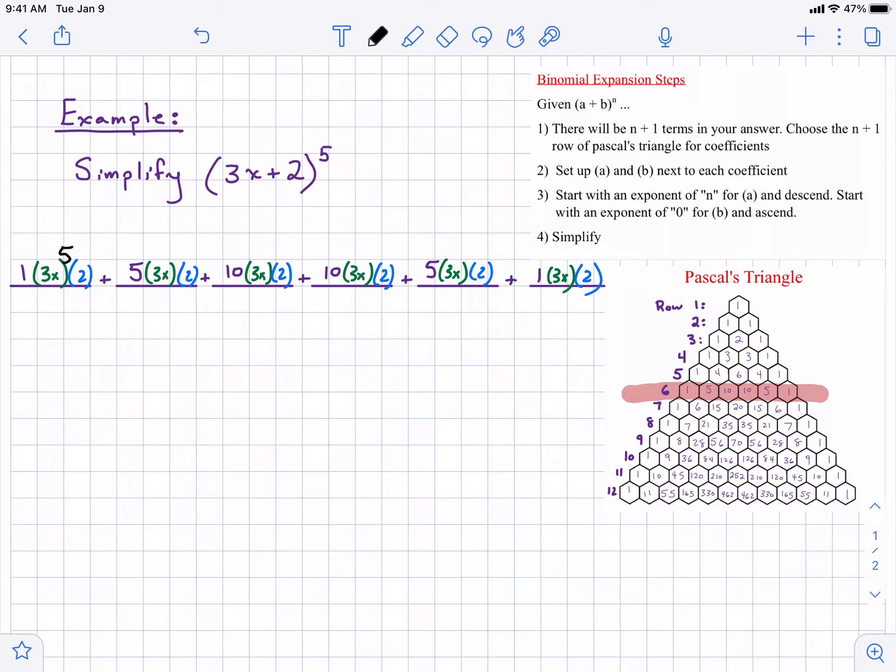This should match whatever your original exponent was. And then it says descend. So for every other 3x, I'm going to count down, ultimately arriving at 0.